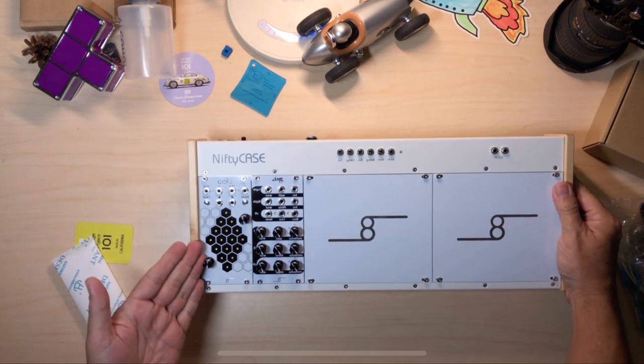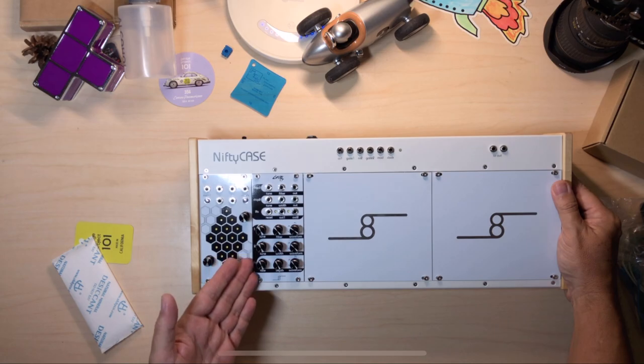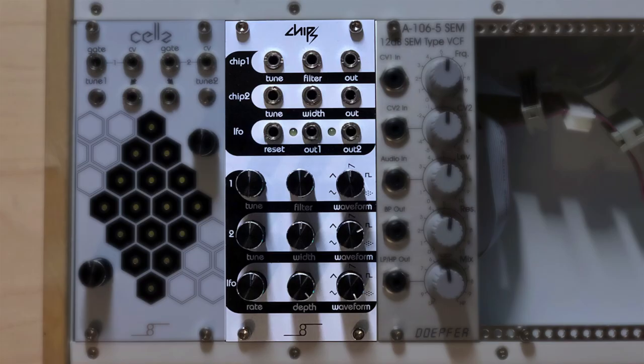Cells is a clever sequencer with two simultaneous patterns. Chips is an interesting, cheap-tuned-ish sound source that has two simple oscillators and an LFO. Technically it's a polyphonic synth.